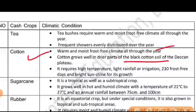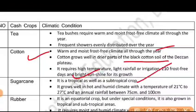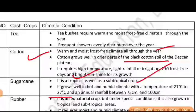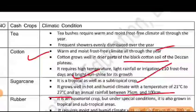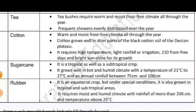Let's talk about sugar cane. Sugar cane is a tropical as well as subtropical crop. It grows well in hot and humid climate with temperatures of 21°C to 27°C. The annual rainfall should be 75 cm to 100 cm. We also see sugar cane growing well in UP and Bihar.